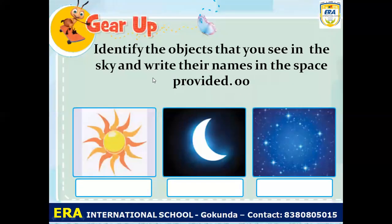Gear up! Identify the objects that you see in the sky and write their names in the space provided. You can see that there are 3 pictures given here, and you have to write the name of each picture.